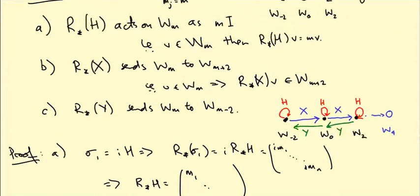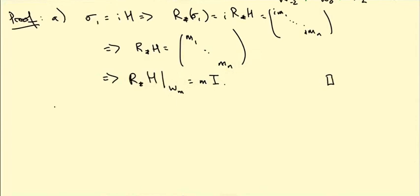Okay, what about X? I'm going to do X and I'm going to leave Y as an exercise for you. So the claim is that if v is in W_M, then r_star X v is in W_{M+2}. That's what we need to prove. What does this condition mean? Well, v is in W_M if and only if it's got weight M. So in other words, H acts as r_star H v equals M v.